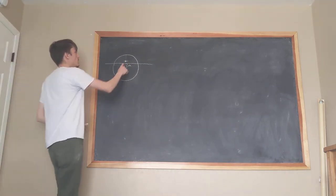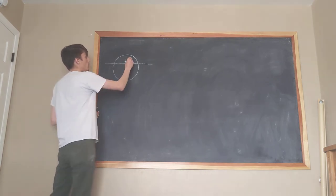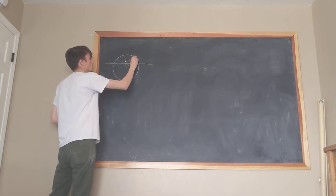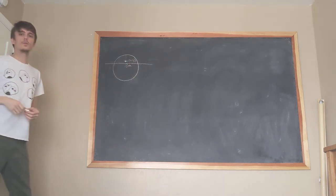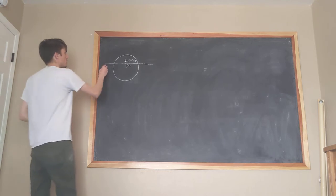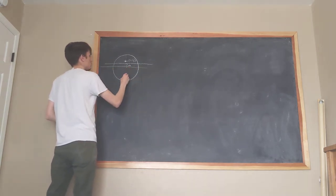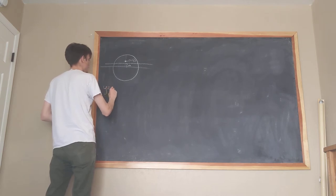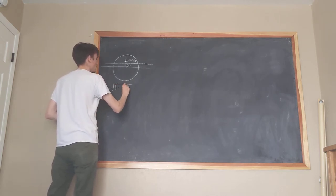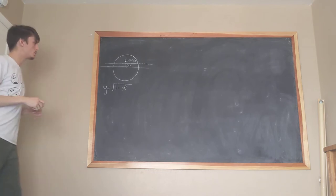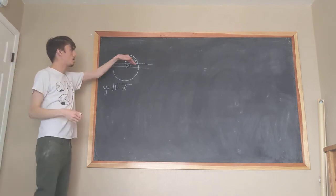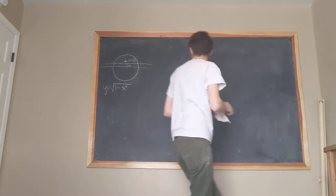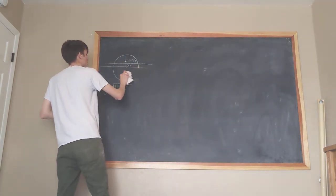We want to find the value of a such that the point (0, 1/2) is the centroid of this segment. Think of this as a unit circle, so y equals the square root of 1 minus x squared. Since we're dealing with the top half of the unit circle, let me go ahead and erase the bottom half completely, as it's unnecessary for everything we're going to do.